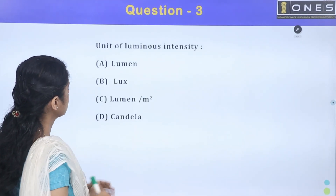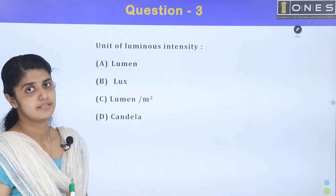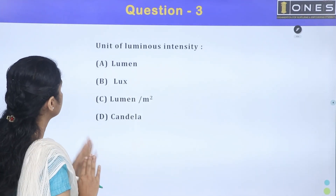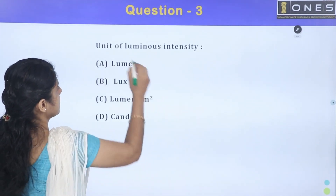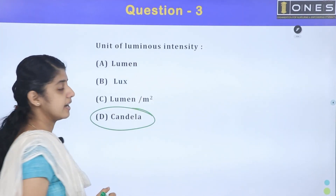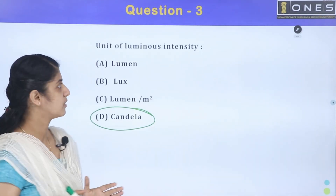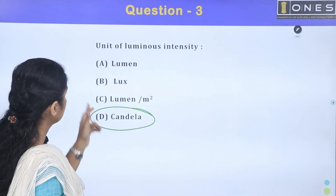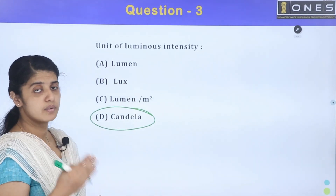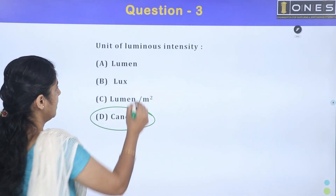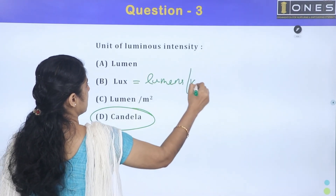Next question: the unit of luminous intensity. The standard unit of luminous intensity is the candela (candle). Illumination uses lux, which is lumens per meter square.